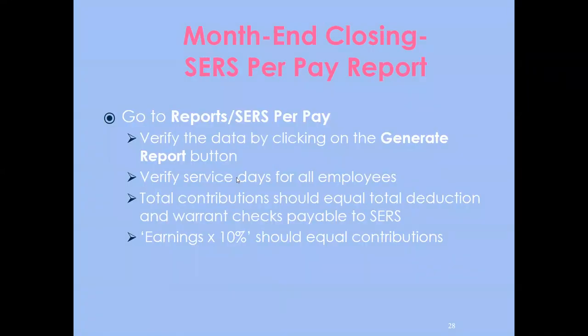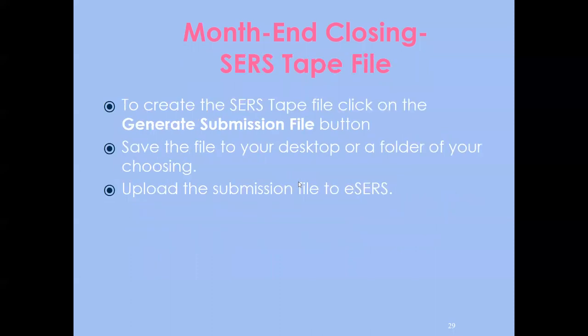For month-end closing, make sure your June STIRS per-pay report is in balance. Under Reports, run the STIRS per-pay report, generate it, and verify the days look correct for employees. The total contribution should equal the total deduction and the warrants paid to STIRS, and the earnings for each employee times 10% should equal the contribution.